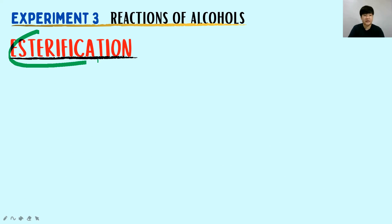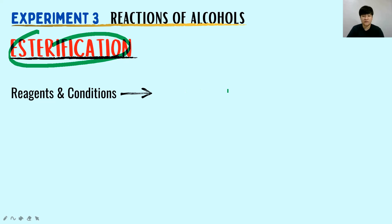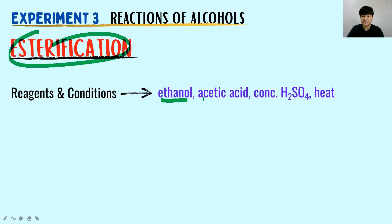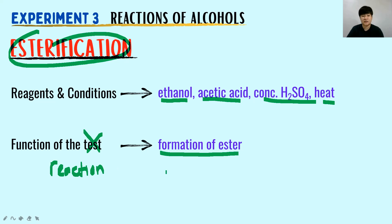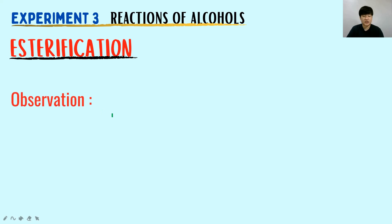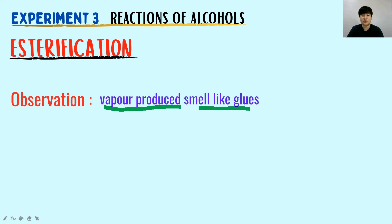Let's look at esterification. The reagent and condition is ethanol, acetic acid (ethanoic acid), concentrated sulfuric acid, and heat. This is not really a test — it's a reaction. The function of the reaction is to produce ester.